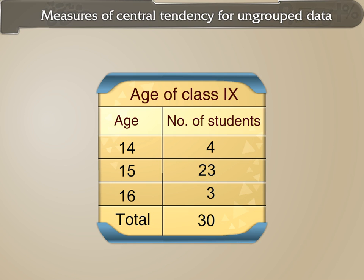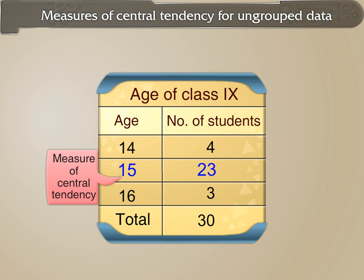Measures of central tendency for ungrouped data. It has been observed that where data are arranged in increasing order, most of the terms seem to be crowded or clustered in the central part. This tendency is called the central tendency of the data, and a number around which there is concentration of terms is called a measure of central tendency or a measure of location.